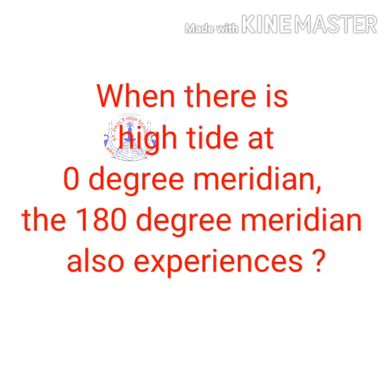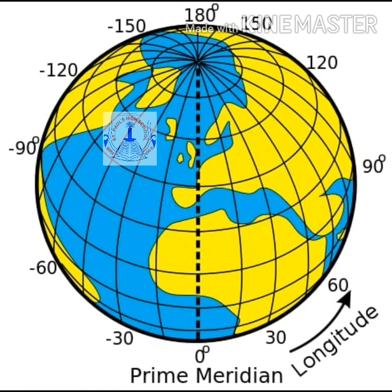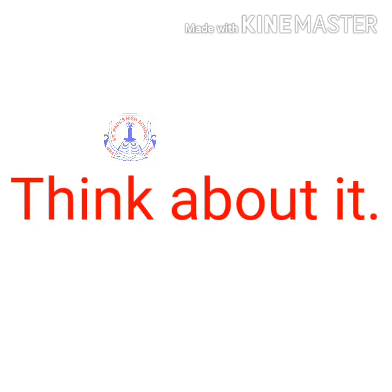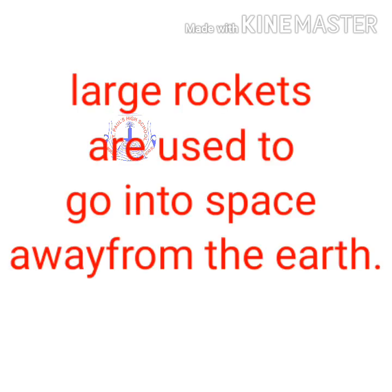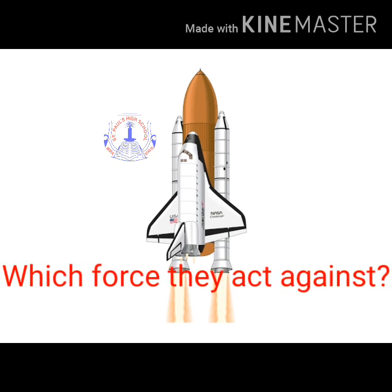When there is a high tide at the 0° meridian, the 180° meridian also experiences high tide. Meridians that are at right angles to those having high tide will experience low tide at the same time. If it is high tide at the 0° and 180° meridians, then at which meridians will low tide occur? Think about it. Large rockets are used to go into space away from the earth — which force do they act against?